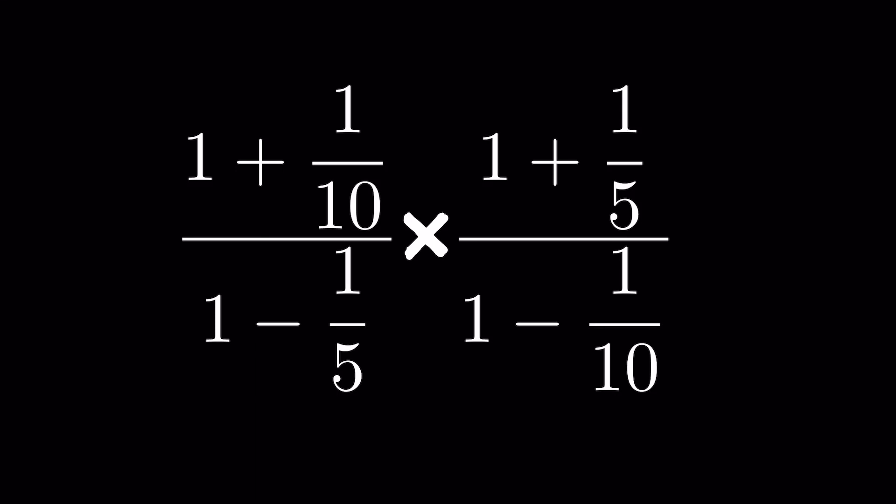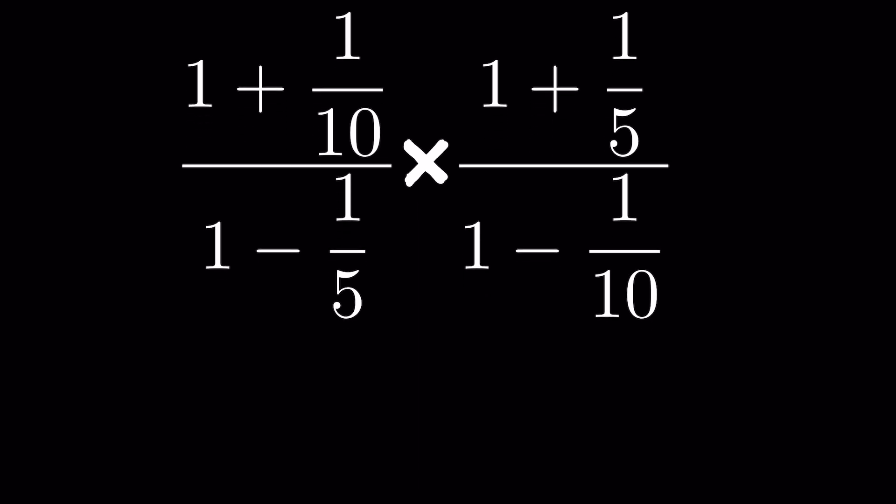1 plus 1 upon 10, upon 1 minus 1 upon 5, times 1 plus 1 upon 5, upon 1 minus 1 upon 10. How to solve this? Here we have addition of fractions and then multiplication of fractions.